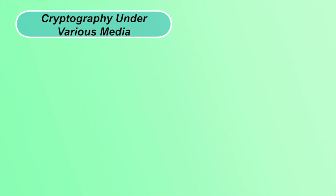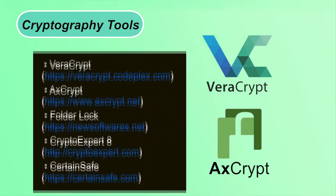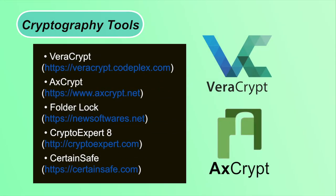Cryptography can be applied across various media — input can be text, images, audio, video, etc. The encryption algorithm converts the original input to ciphertext, and the decryption algorithm converts it back. Various cryptography tools are available such as VeraCrypt, xCrypt, Folder Lock, CryptoExpert 8, and CertainSafe, in which algorithms like DES, 3DES, RSA, and AES are already implemented. These open-source tools are freely available on the internet with download links provided in the slides.